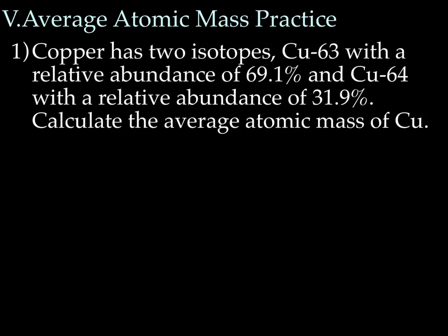Get your calculators handy. We are going to now calculate average atomic mass. Again, it's not nearly as bad as it sounds. So let's read over the question. I'm going to discuss a few things with you, and then we'll set up the problem. So our question says, copper has two isotopes. Copper 63, with a relative abundance of 69.1%, and copper 64, with a relative abundance of 31.9%. Calculate the average atomic mass of copper.